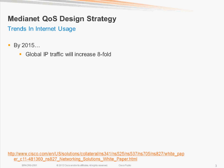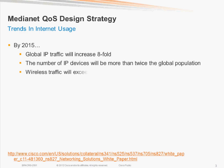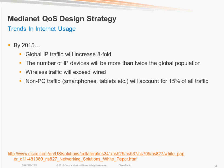For example, global IP traffic continues to exponentially increase. By the end of 2015, the number of IP devices will be more than twice the global population. Wireless traffic will actually exceed wired traffic by that time as well. Non-PC traffic — including tablets and smartphones — will account for 15% of global IP traffic by end of 2015, increasing by an average of 150% per year to reach that number.